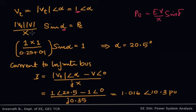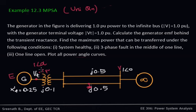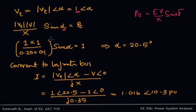The total reactance X between Vt and V is 0.1 plus the resultant of the two parallel 0.5 lines, giving 0.35. So we get 1 × 1 / 0.35 · sin α = 1, since one per unit of power is being transferred. Solving this gives alpha equal to 20.5 degrees.